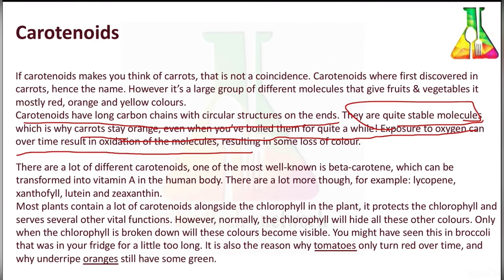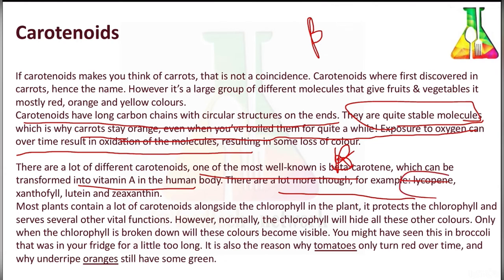There are many different carotenoids; one of the most well known is beta-carotene, which is a precursor of vitamin A and can be transformed into vitamin A. Other examples include lycopene, xanthophyll, lutein, and zeaxanthin.